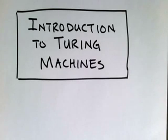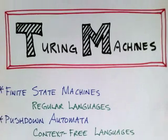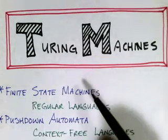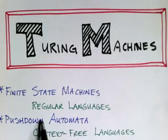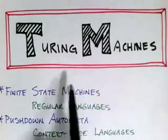In this video we're going to introduce Turing machines and informally describe how they work and what they're all about. Let's begin by putting the Turing machine into some context. We've already talked about some other kinds of machines — finite state machines and non-deterministic pushdown automata — and now we're introducing a new kind of machine: the Turing machine.